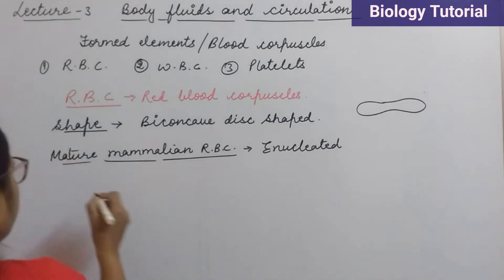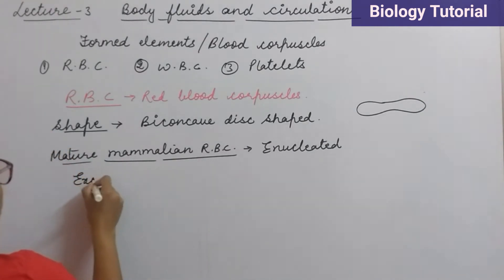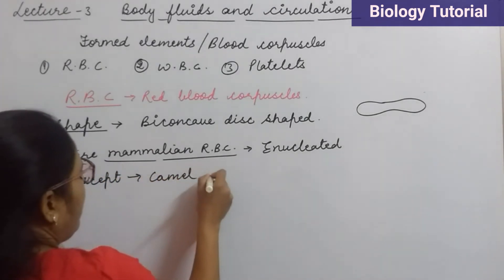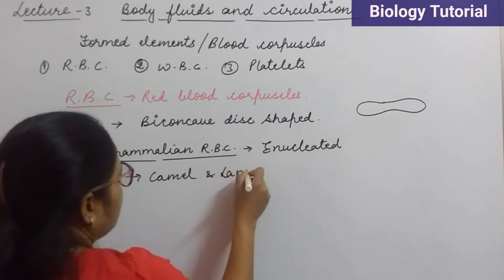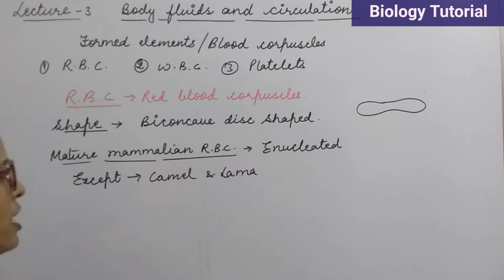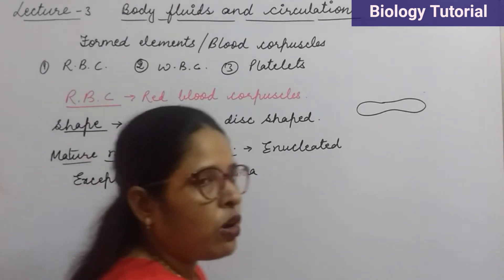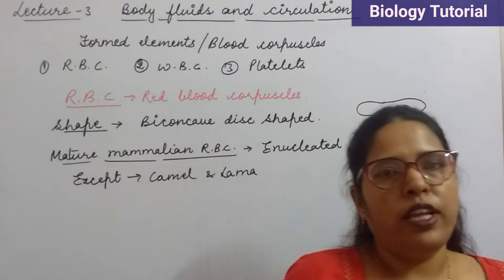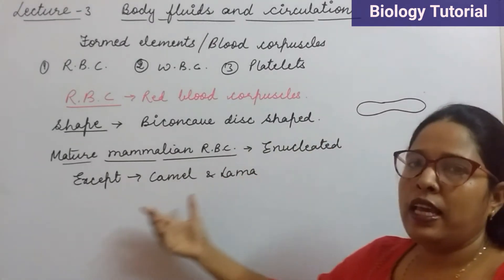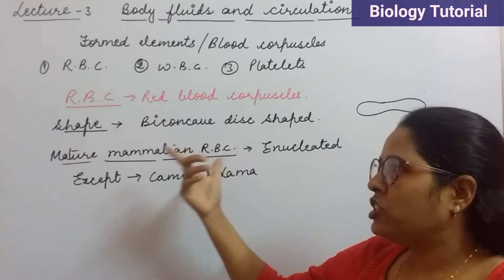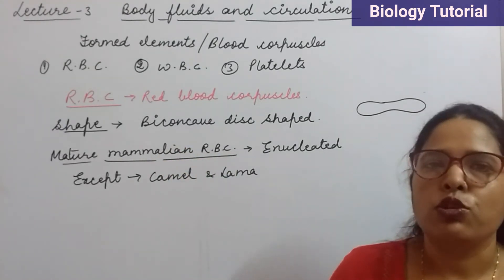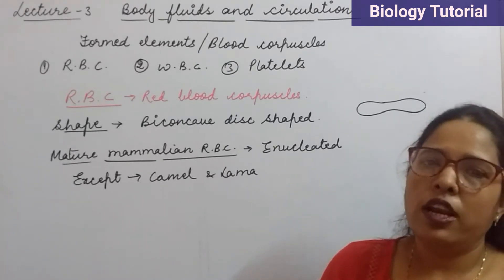There is an exception. Two mammals — camel and llama — have nucleated RBCs. These are the two mammals which have nucleated RBCs. So the nucleus is present in their RBCs. But for all other mammals besides camel and llama, the mature RBCs do not have a nucleus.